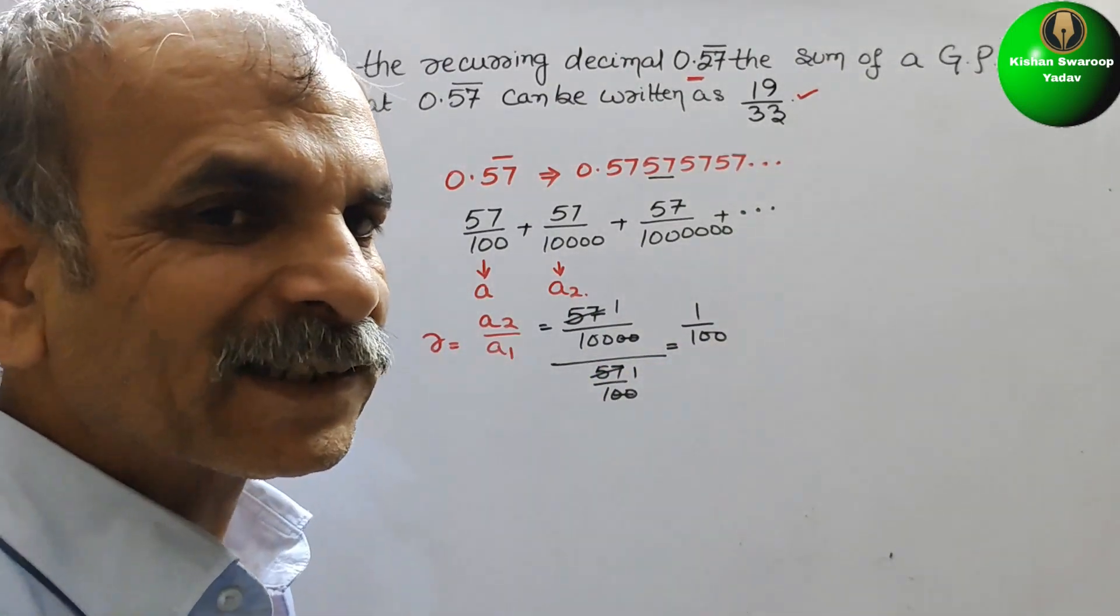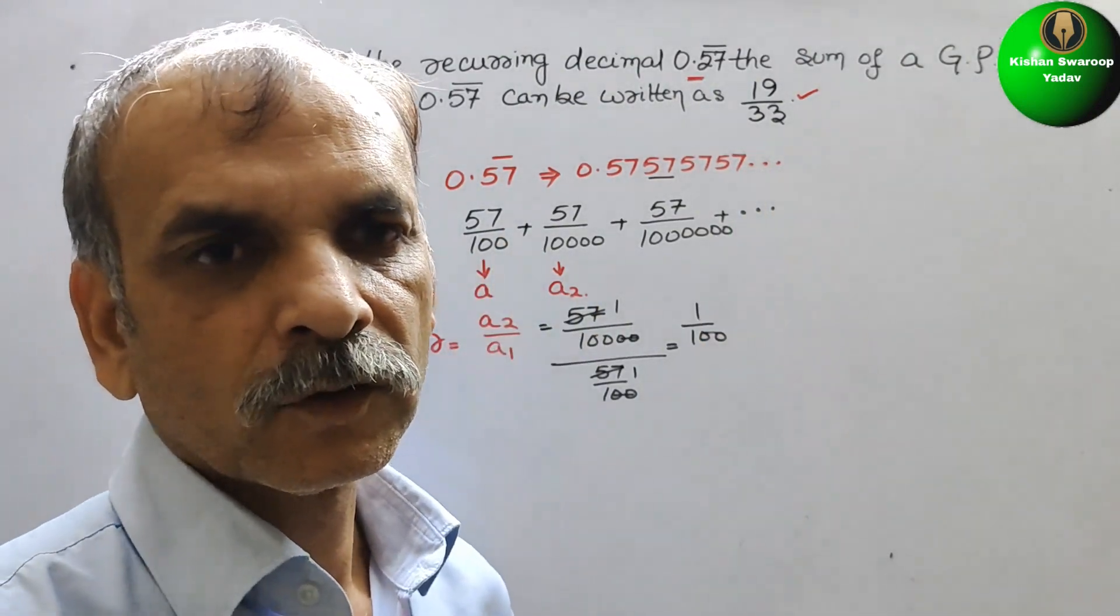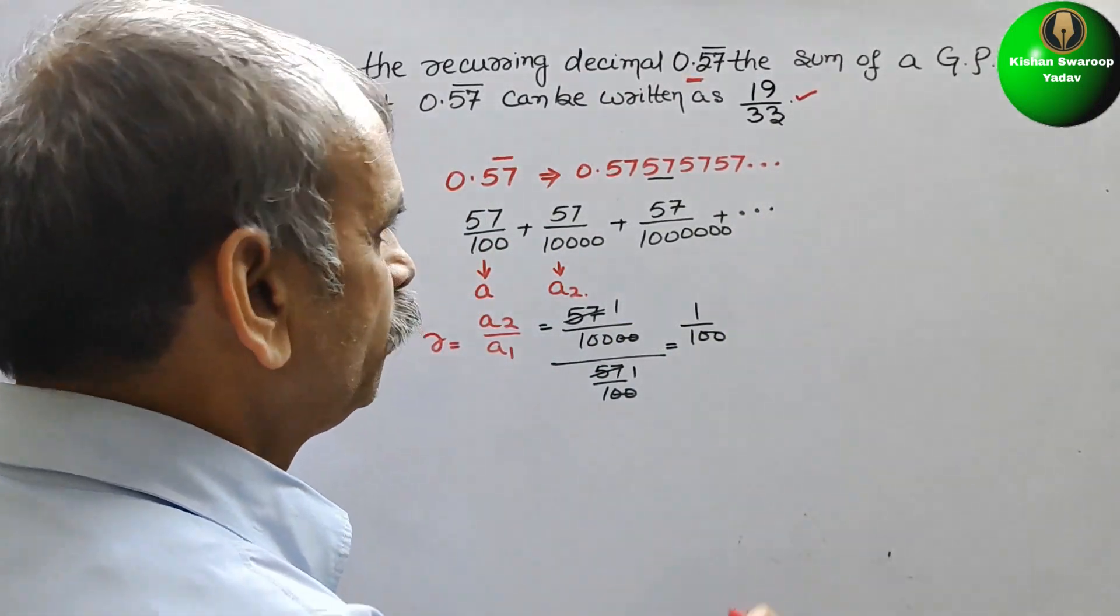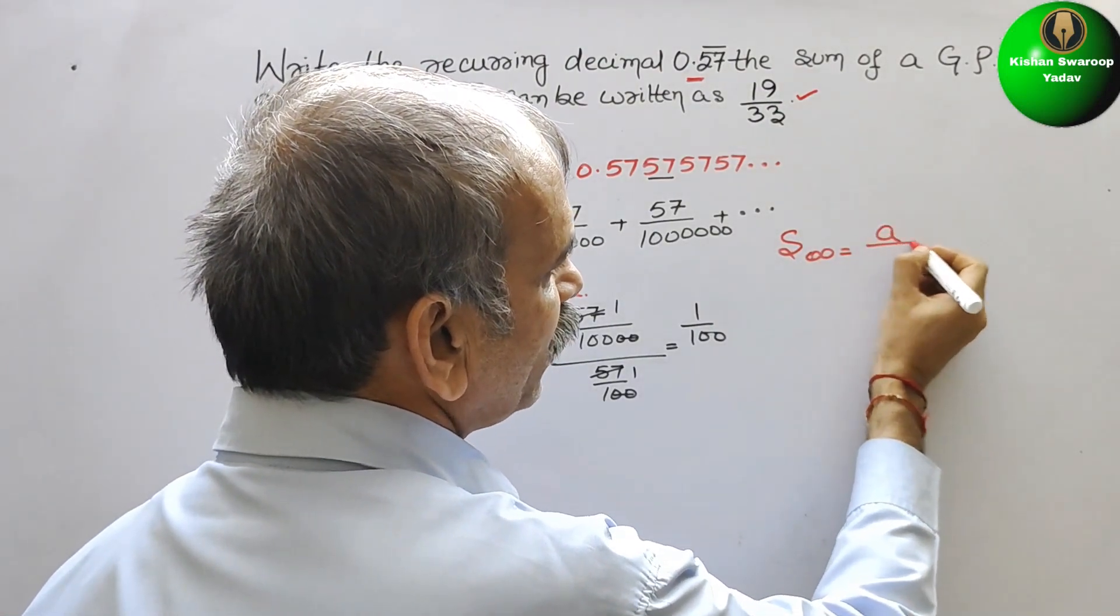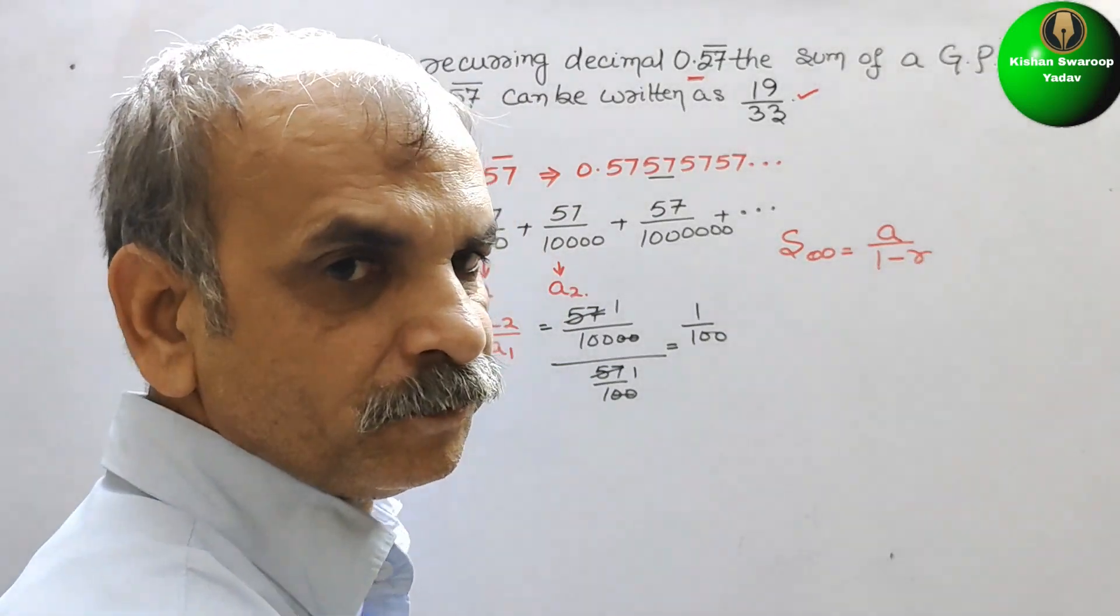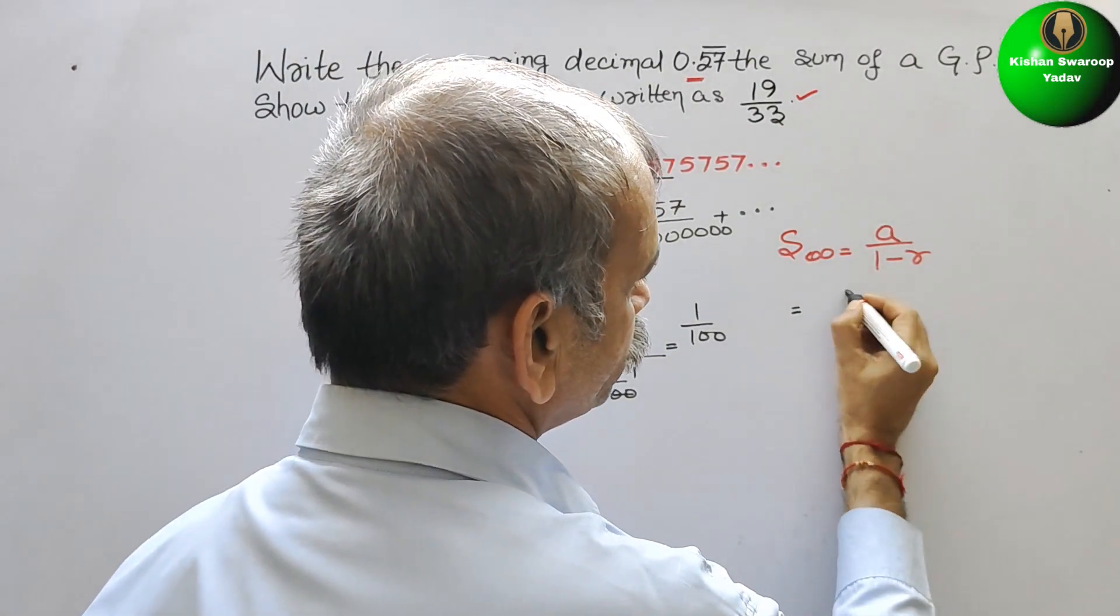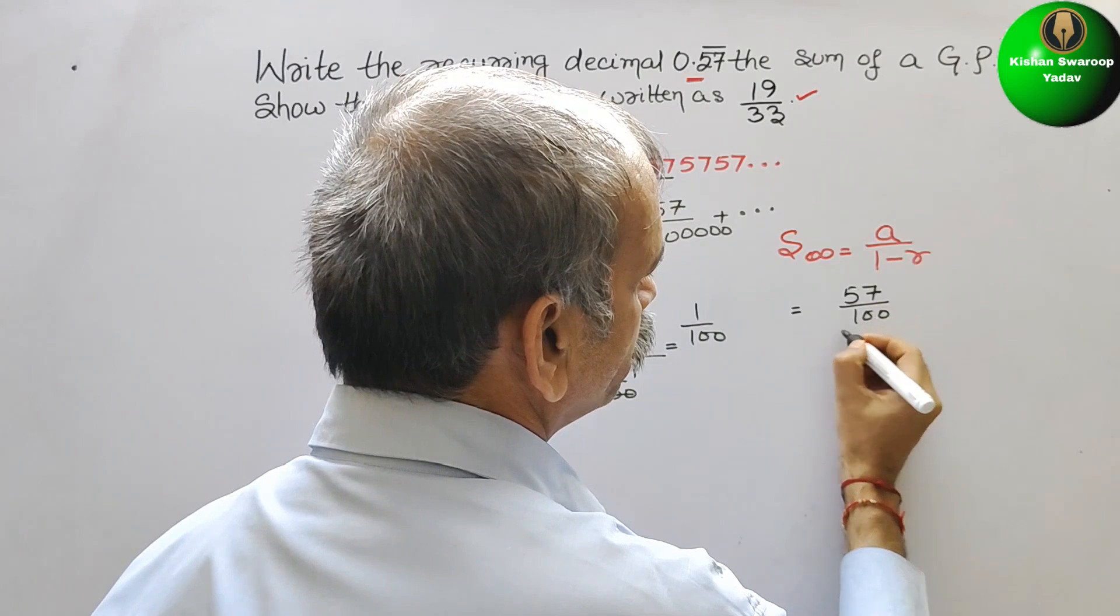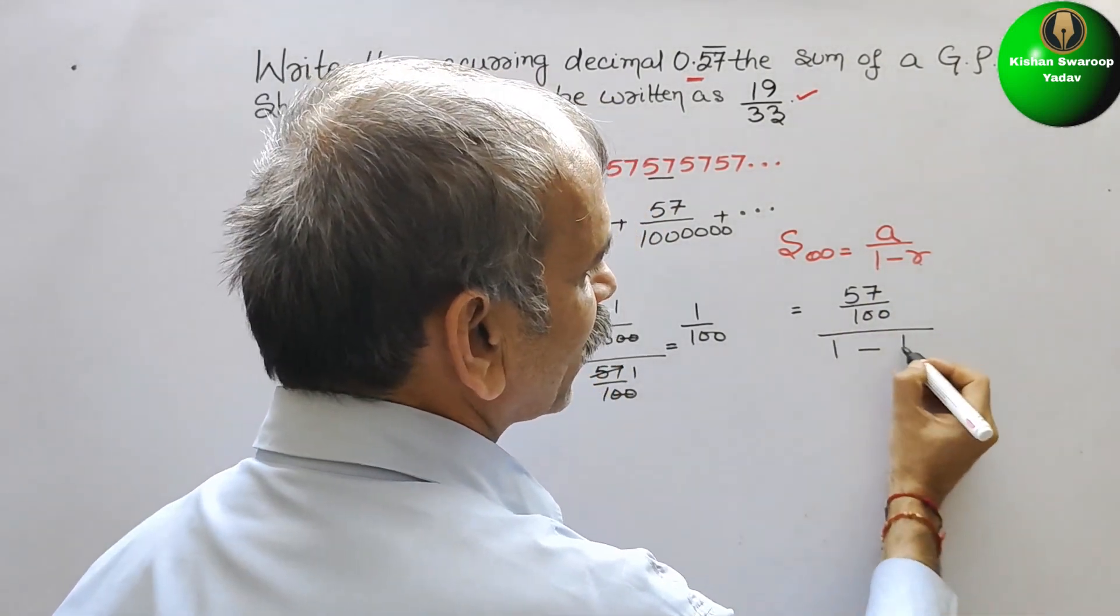Now we will write the sum. Why? Because we are not knowing where it will get ended. So it is the infinity. So sum infinity is A by 1 minus R. Now substitute the values here. A is 57 by 100, divided by 1 minus R. R is 1 by 100.